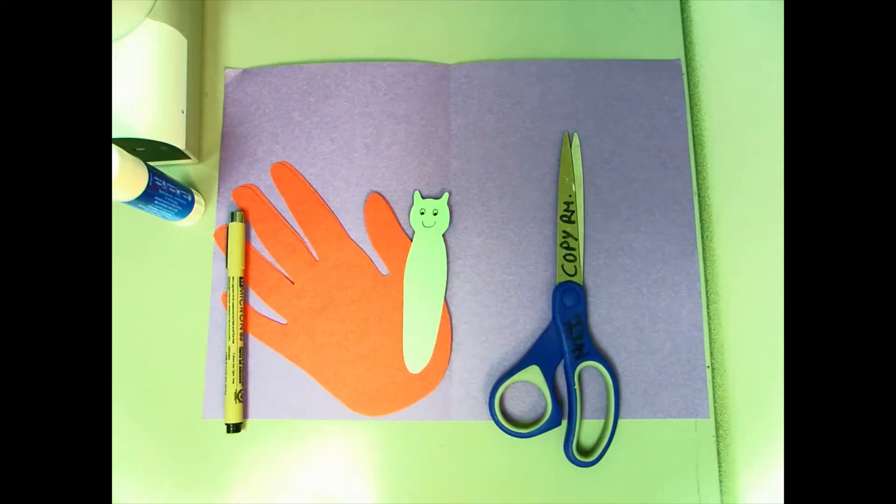The materials for our project today are a glue stick, a pen or pencil to outline your hand, two different colors of construction paper, a butterfly body, and a pair of scissors.